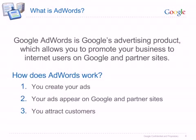But how does it work? Firstly, you create your ads and choose keywords, which are words or phrases related to your business. Then your ads appear on Google and partner sites. When people search on Google using one of your keywords, your ad may appear next to the search results.